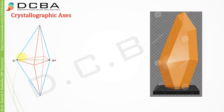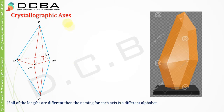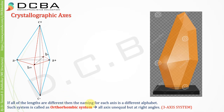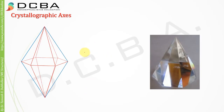Here we have a minus, a plus, b minus, b plus, and c minus, c plus. All three axes are of different lengths but they are at right angles to each other. Such a system where all three axes are of different lengths is called the orthorhombic system — all axes unequal but at right angles to each other.